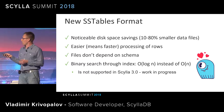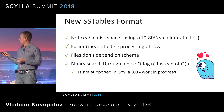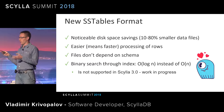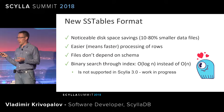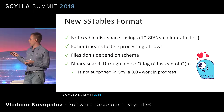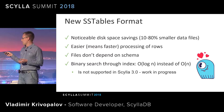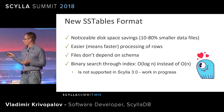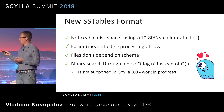So what are the advantages the new SSTable format brings? First, noticeable disk space savings — data files can be 10% to 80% smaller. Second, easier and faster processing of rows since grouping is done naturally. Third, files no longer depend on schema, making it easier to build standalone tools around SSTables. For performance, it is now possible to do binary search through the index using an offsets map, which is a huge gain for large partitions. This is not in Scylla 3.0 yet but is a work in progress.